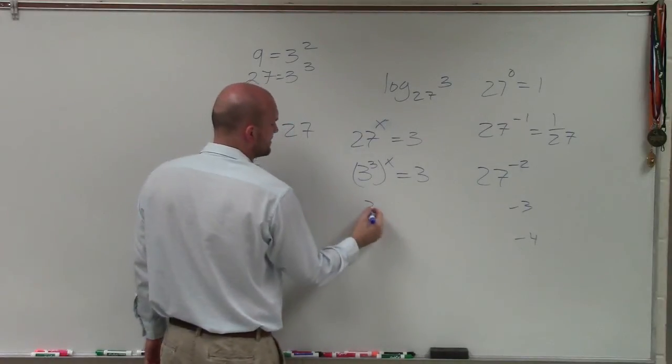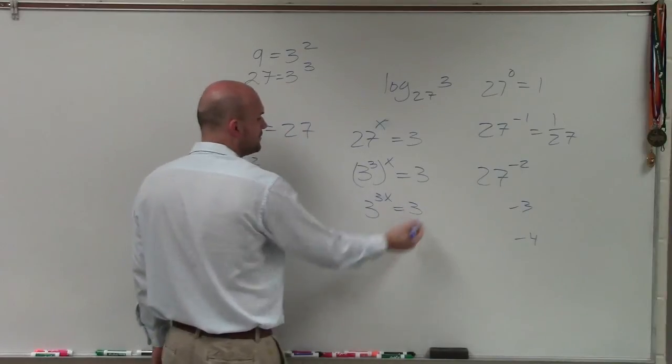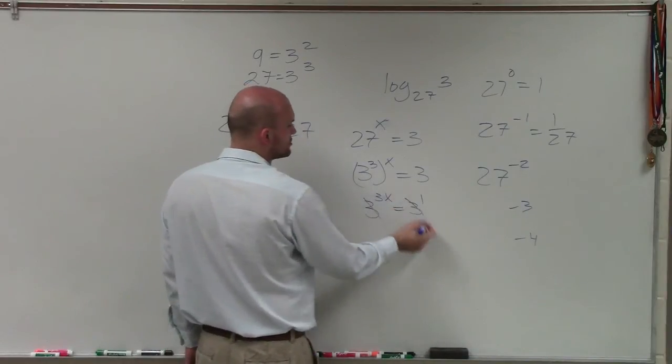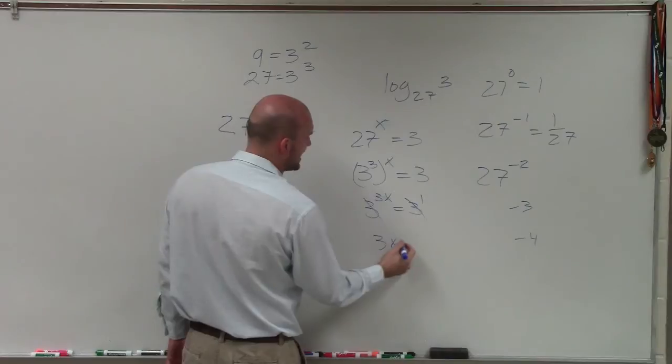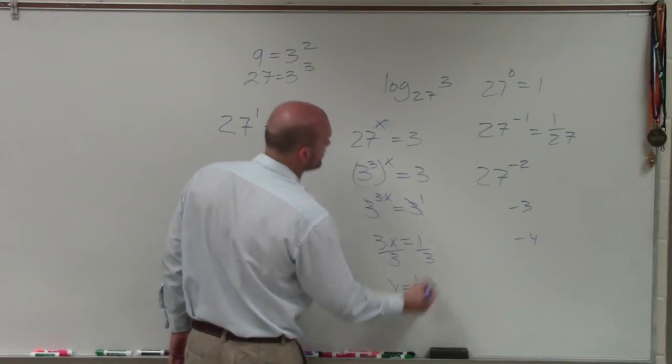Therefore, by properties of exponents, I can multiply these. So that's going to give me 3x equals 3. Now, that's to the first power. Using my one-to-one properties, I have 3x equals 1, divided by 3 on both sides, so x equals 1 third.